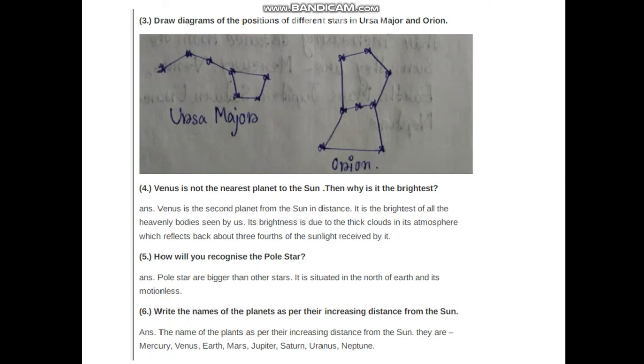Write the names of the planets as per their increasing distance from the sun. They are Mercury, Venus, Earth, Mars, Jupiter, Saturn, Uranus, and Neptune.